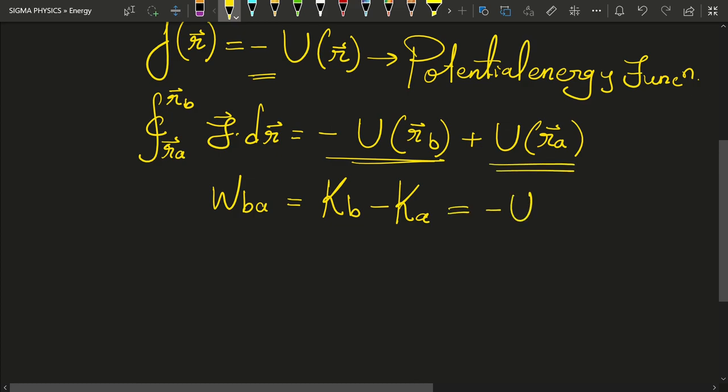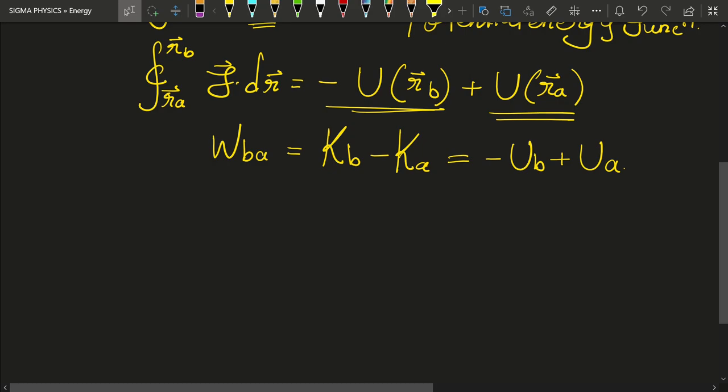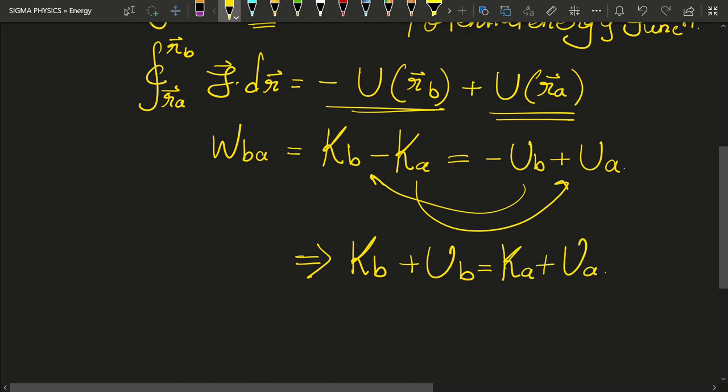then this would simply be equal to minus Ub plus Ua. And now what I can do is take Ub on this side and take Ka on this side, so that I will get Kb plus Ub is equal to Ka plus Ua.